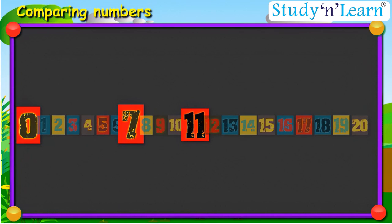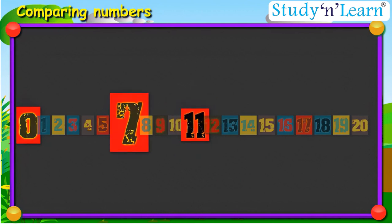Let us recap. While comparing two numbers, the number which is farther away from zero is the bigger number as compared to the other number.